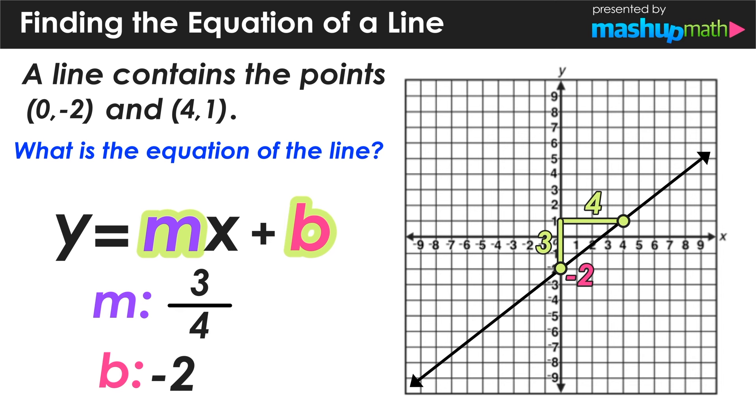And now we can answer the question by replacing the values of m and b in the slope-intercept form equation. We know that the value of m, the slope, is 3 over 4, and the value of b, the y-intercept, is negative 2. So we can conclude that the equation of this line is y equals 3 over 4x minus 2.